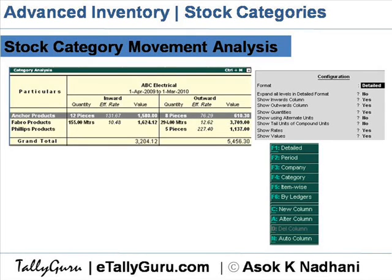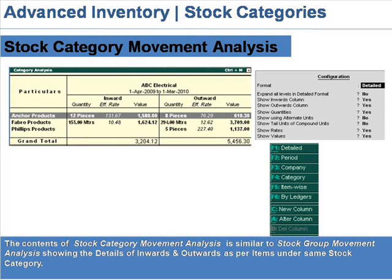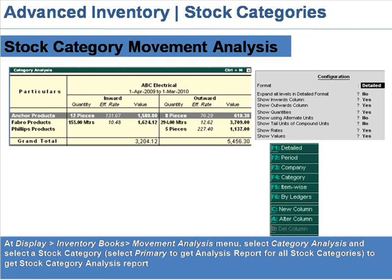Stock Category Movement Analysis is similar to Stock Group Movement Analysis, showing the details of inwards and outwards as per items under the same category. At the Inventory Books Movement Analysis menu, select Category Analysis and select a stock category. Select Primary to get the analysis report for all stock categories.